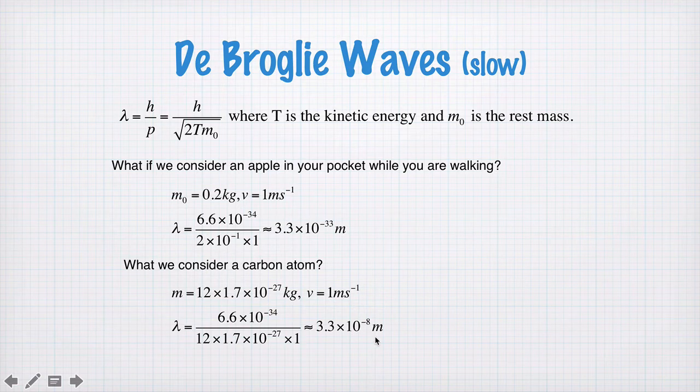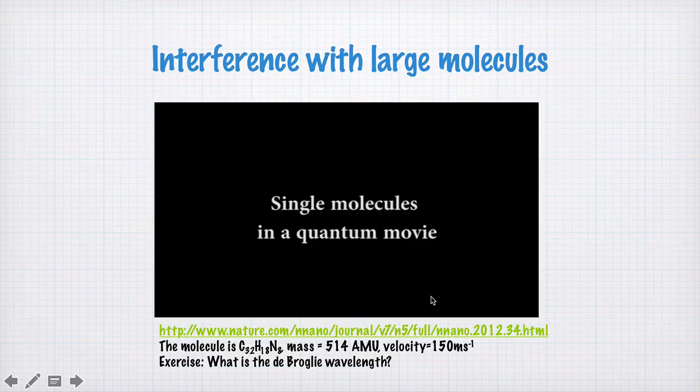And the wavelength then is about 3 by 10 to the minus 8 meters. And this is much closer to the wavelength of light, for example. So we should perhaps be able to see interference of single atoms if we fire them through a double slit experiment, as long as they're traveling slowly enough. So this is quite a slow velocity here, 1 meter per second.